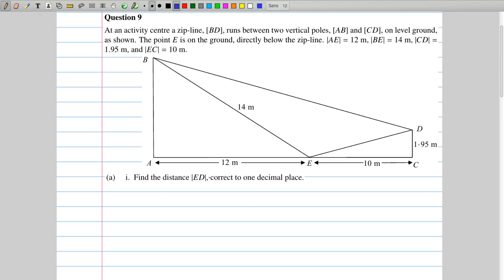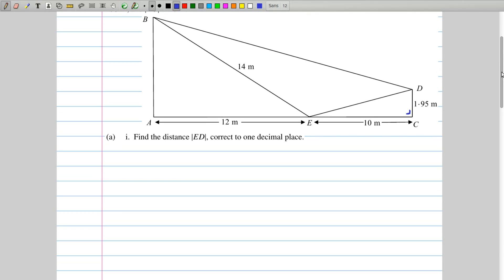The first question asks us to find the distance ED correct to one decimal place. Since we're told that this is level ground and these poles are vertical, we know that this is a right angle here. With that we're allowed to use trigonometric rules. We can use Pythagoras' theorem and the trigonometric identities. So what applies here? Well we have two sides and we're looking for a third, so that means we're looking at Pythagoras' theorem.